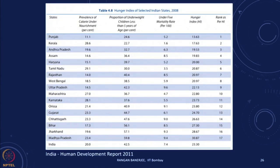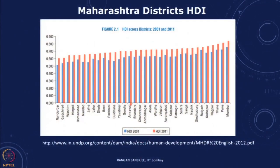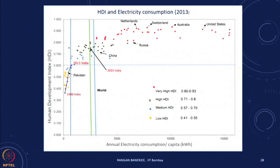Apart from HDI, there are other indicators to consider. You may have an overall good quality of life but still have a problem in terms of hunger. There are indices measuring what proportion of the population does not get the required nutrition — the hunger index. There are also studies computing the HDI for various districts within a state, such as in Maharashtra, showing how energy use and HDI combine at a sub-national level.